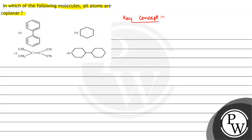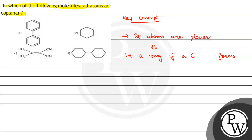The key concept in the question will be that SP atoms are planar. In a ring, if a carbon atom forms a double bond, then it is SP hybridized.